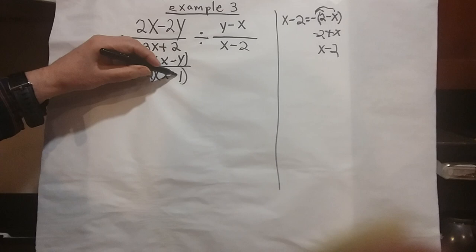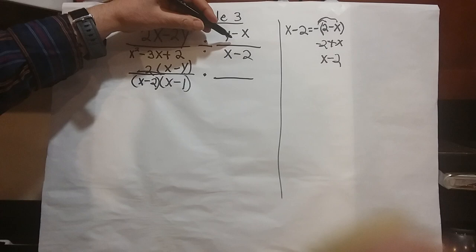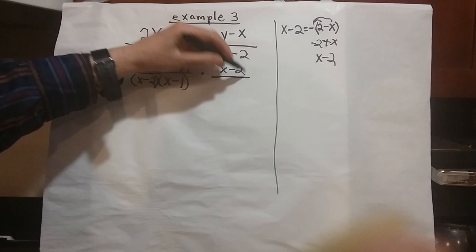Change this to times, and don't forget to do the reciprocal of the second fraction. The x minus 2 on the bottom goes on top, and the y minus x on top goes on the bottom.